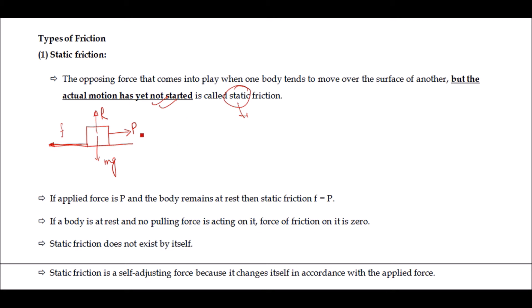Suppose we apply a force of 1 newton and the maximum static friction this body can produce is 10 newtons — then the static friction that develops equals 1 newton. If the applied force is P and the body remains at rest, then static friction f equals P. If a body is at rest and no pulling force acts on it, the force of friction is zero — it does not exist by itself. That is why static friction is called a self-adjusting force: it changes in accordance with the applied force.